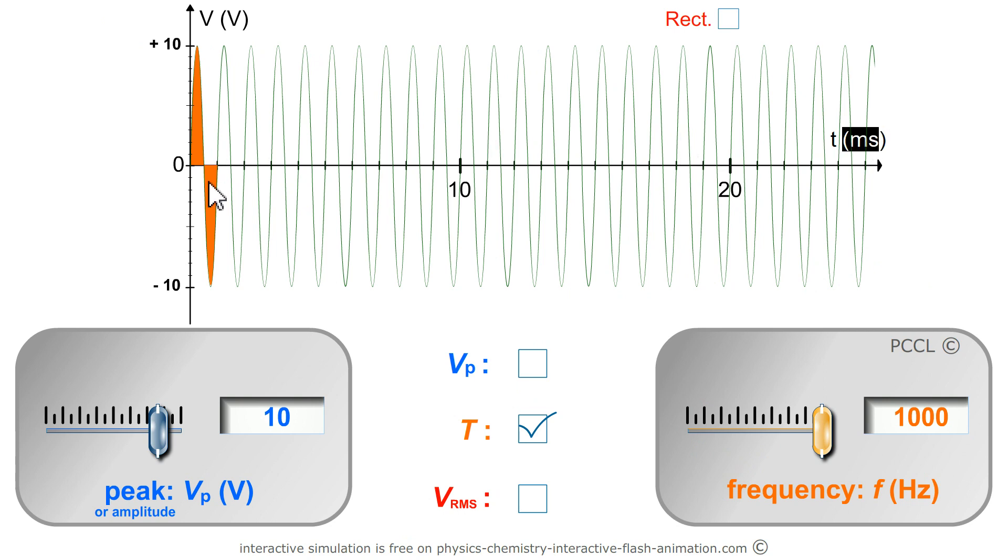When the period is equal to one millisecond, that is to say one thousandth of a second, the frequency is equal to one thousand hertz. A thousandth, a thousand. The frequency is the reciprocal of the period. Each is the inverse of the other.